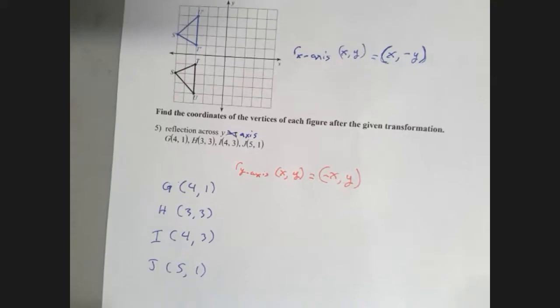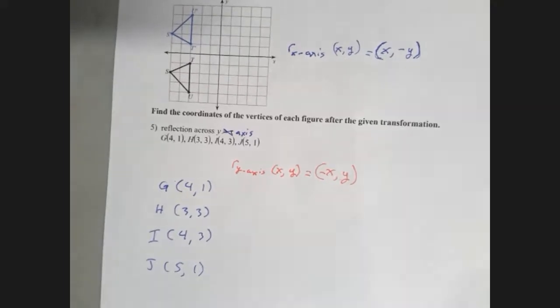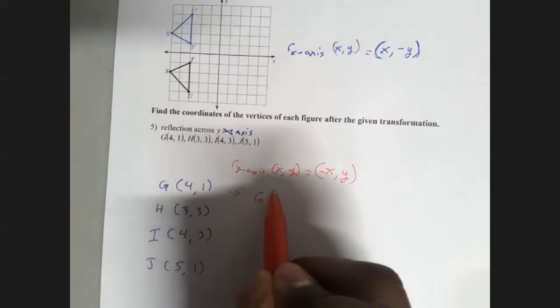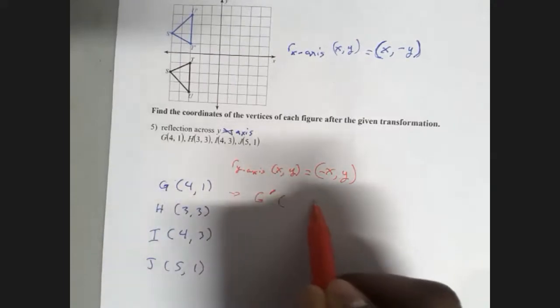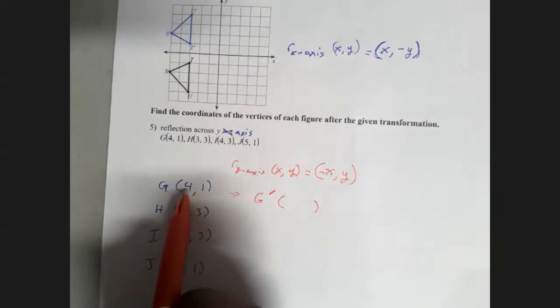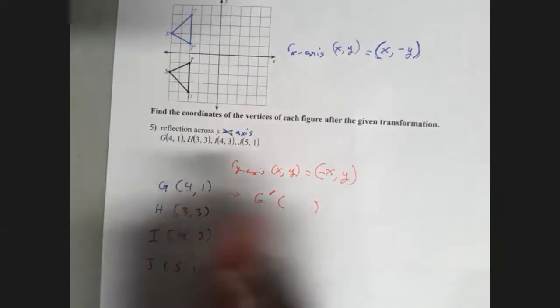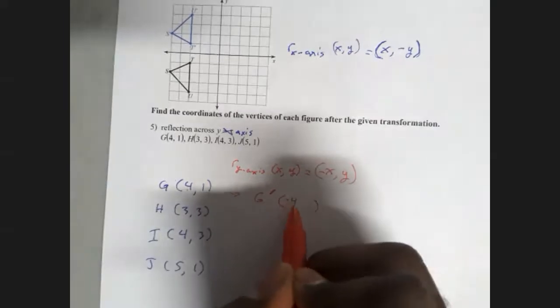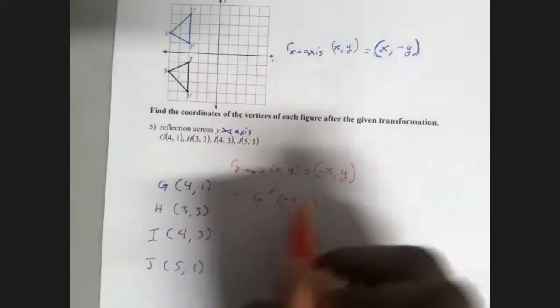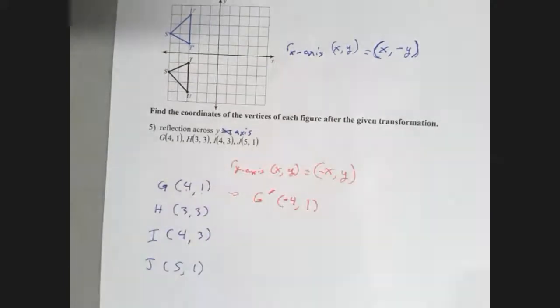So all you have to do is simply write the new vertices and where they're located. G is going to become G prime. Our x is becoming the opposite, so this is a positive 4. I want to make this negative 4. My y stays exactly the same, so that's going to be (-4, 1).